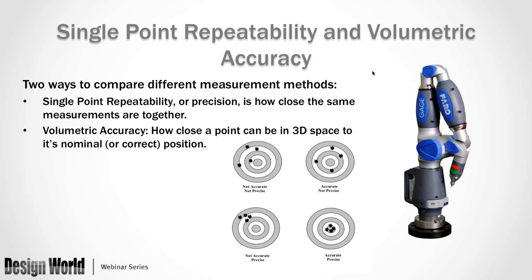So when you see single-point repeatability and they give a number, and you see volumetric accuracy and you're given a number, this is what those two numbers represent — how precise the machine is and how accurate the machine is. Those two numbers are generally different. Now that you know the difference between those two, we'll go ahead and move on.